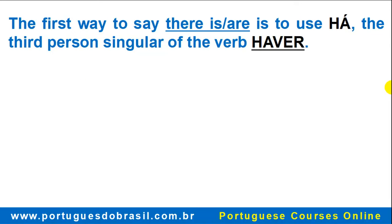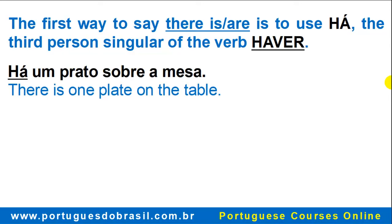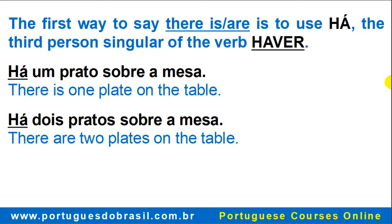The first way to say 'there is, there are' is to use 'há', the third person singular of the verb haver. Examples: 'Há um prato sobre a mesa.' 'Há dois pratos sobre a mesa.' Note that we use 'há' for both singular and plural.